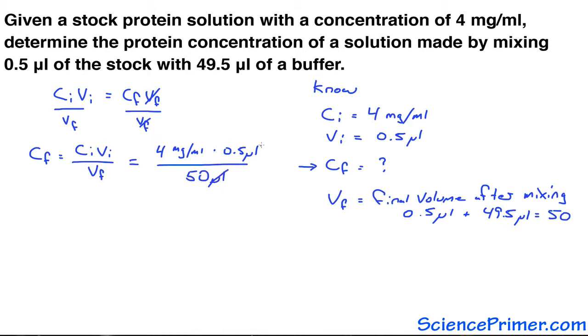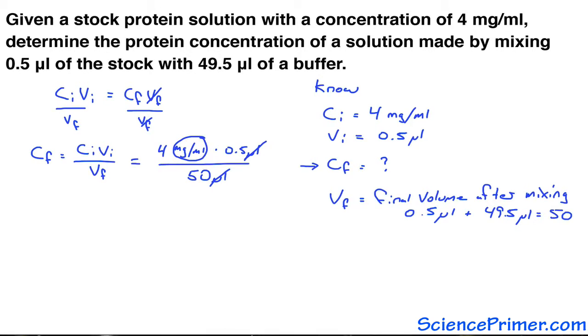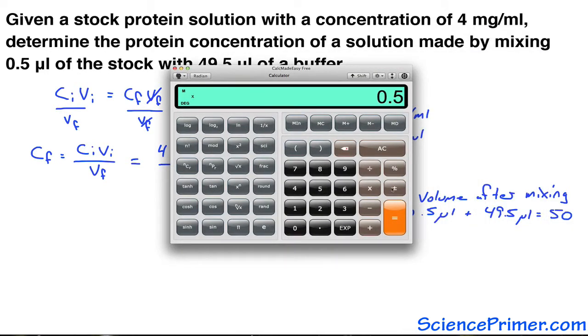Set up this way, there's a microliter unit on the top and the bottom, so they cancel, leaving us the units of mg per mil. Doing the math, 4 times 1 half divided by 50 equals 0.04.